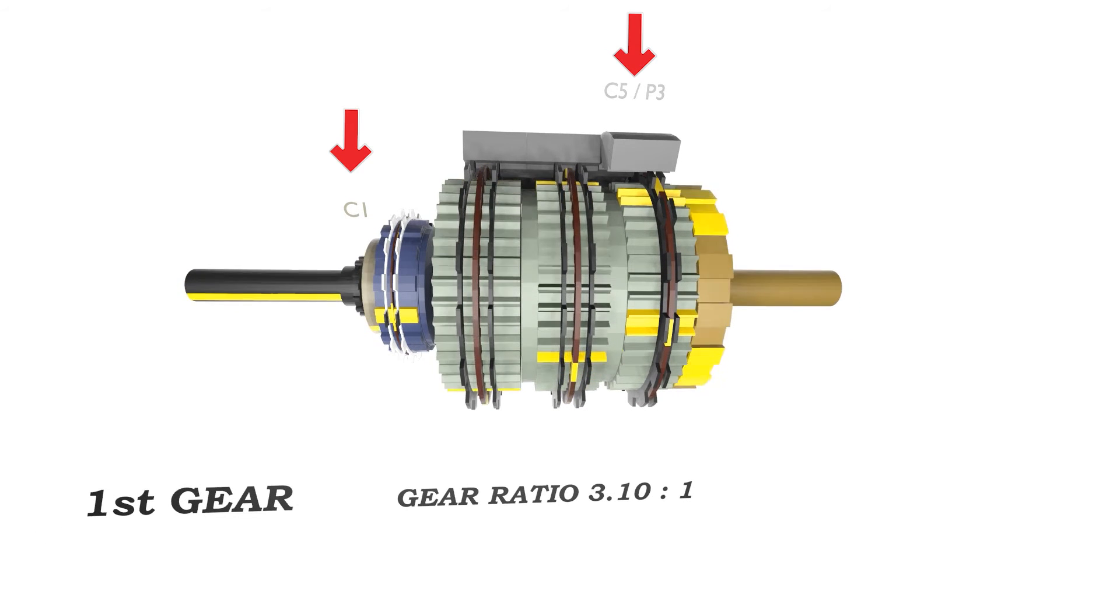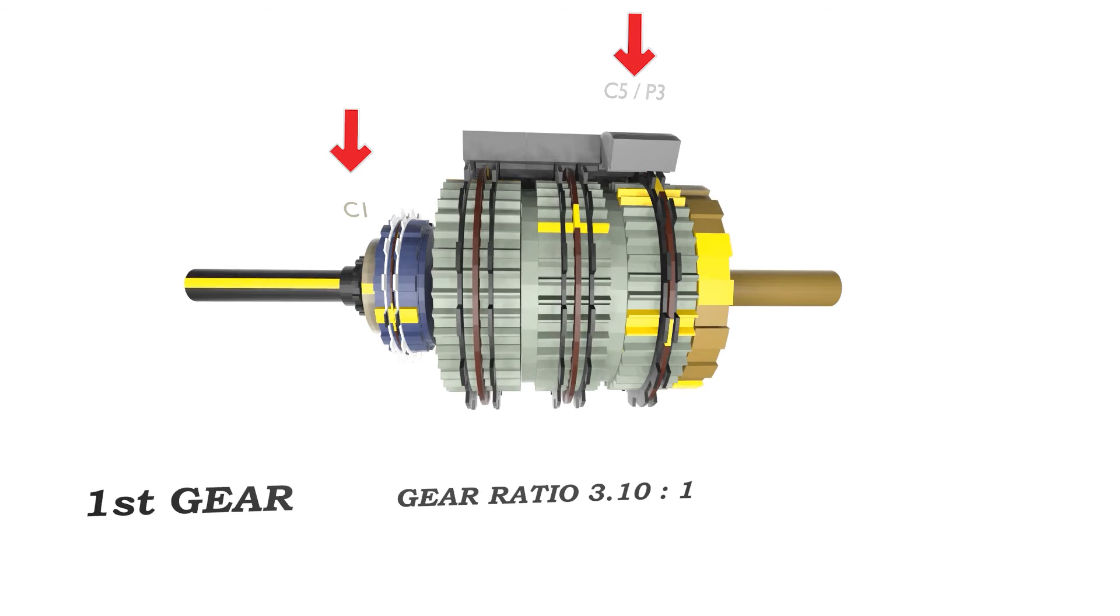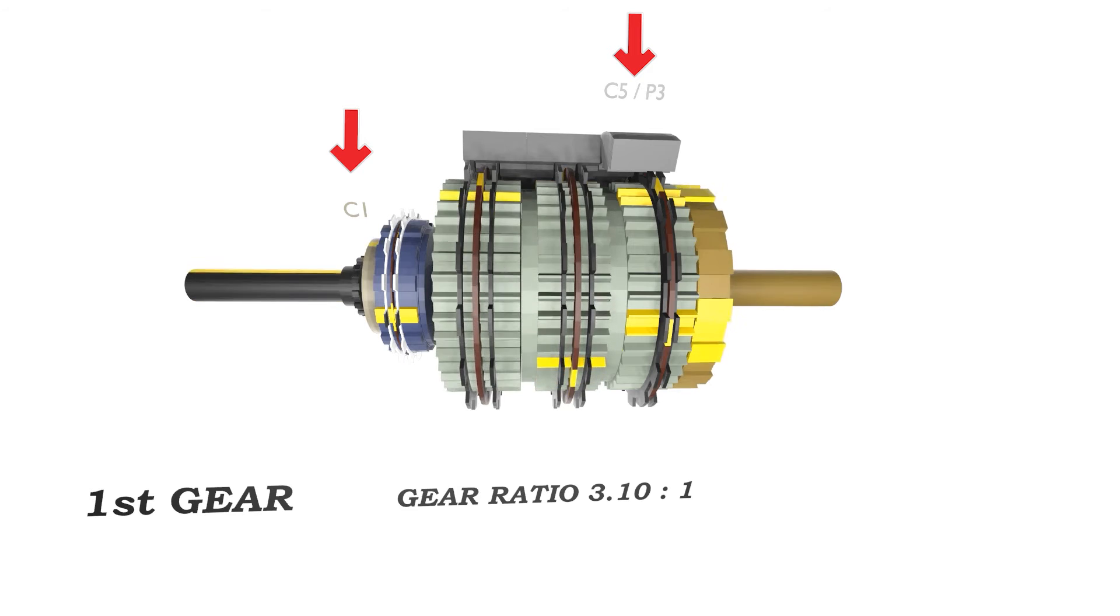The gear ratio for first gear is 3.10 to 1, meaning that the input shaft will turn 3.1 times to deliver one turn out of the output shaft.